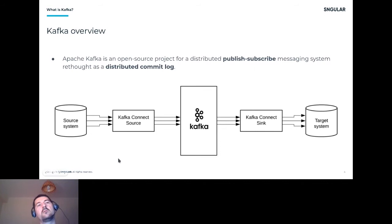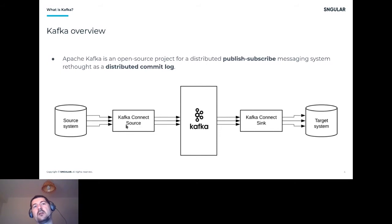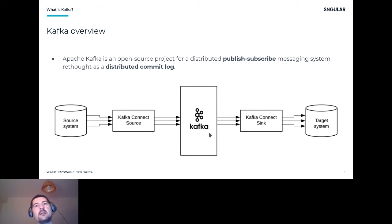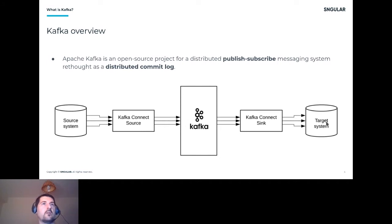In this diagram you can see a source system, then Kafka Connect which allows us to bring data from different external source systems and get the data loaded into Kafka. Once we've done all the transformations and modified the data the way we need, we can also push it to other different target systems.